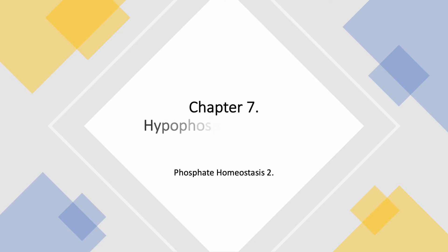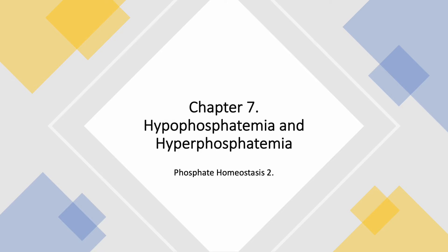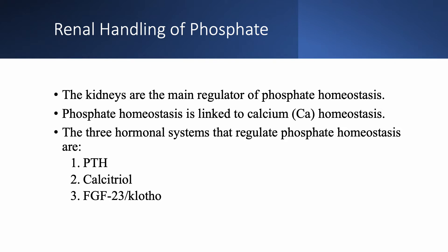We are still on Chapter 7, Hypophosphatemia and Hyperphosphatemia. This is Part 2 of Phosphate Homeostasis. As we mentioned before, renal handling of phosphate involves three hormonal systems: parathyroid hormone, which we discussed in the previous lecture, and today we are going to discuss calcitriol and FGF23.